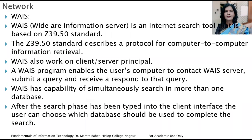Next is WAIS — Wide Area Information Service. It is an internet search protocol that uses Z39.50 standards, which describe the protocol for computer-to-computer information retrieval. It works on the client-server principle and has the capability to search more than one database simultaneously. After the search phase, the client interface user can choose which database should be used to complete the further search.